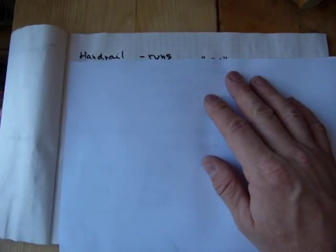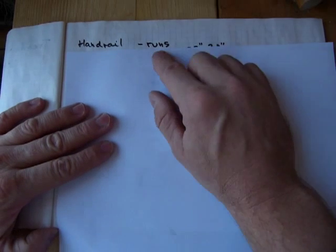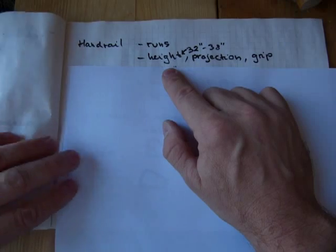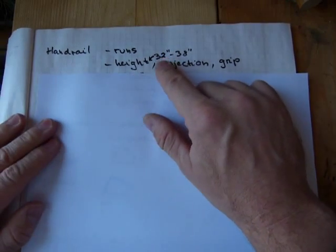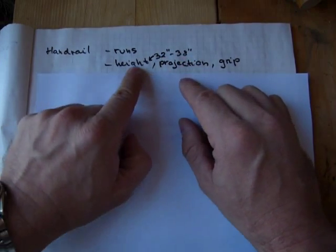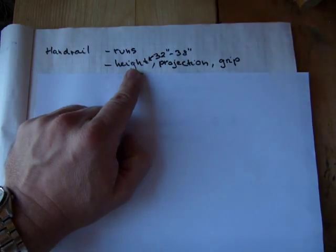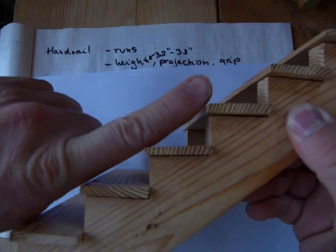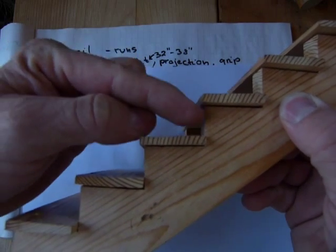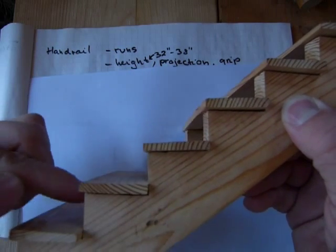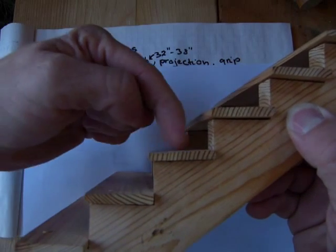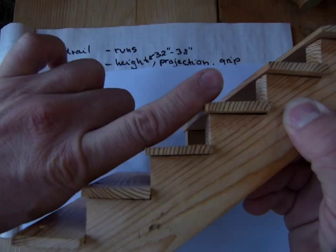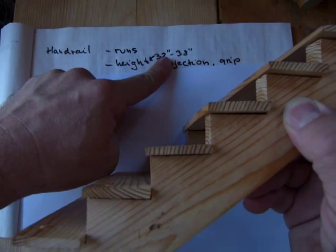In the building code, you will find numbers and figures on how the handrail should run, what the handrail's height should be. It's typically between 32 and 38 inches. And that height is measured above the nosing line. The nosing line is here, is a straight line placed on the nosing of the stair treads. So it's not measured from here, 32 inches up. It's measured from the nosing line, 32 inches up.